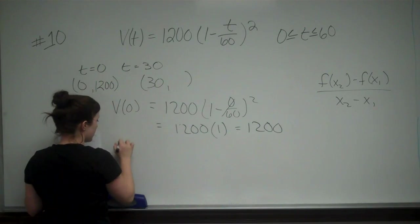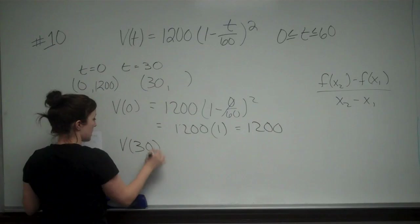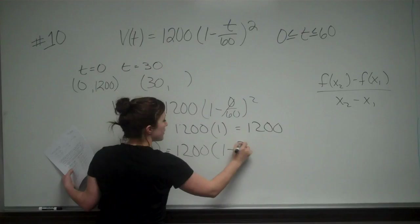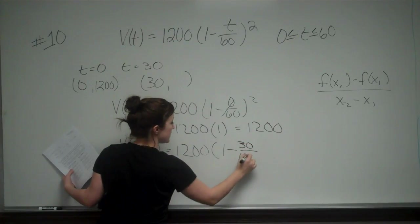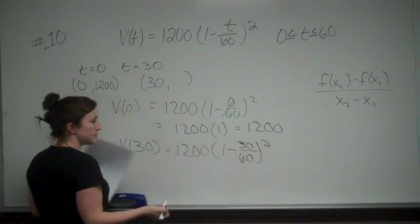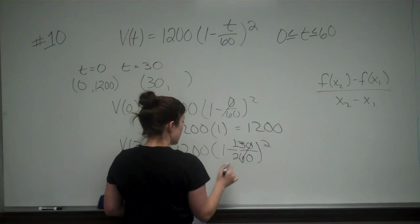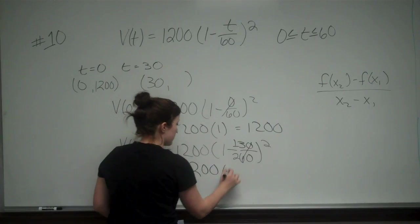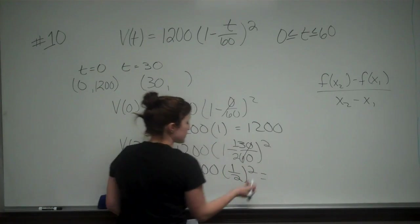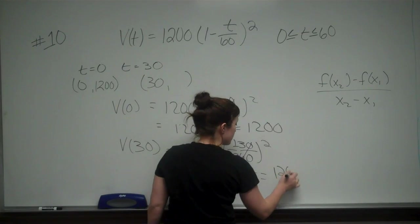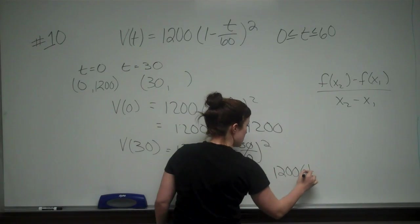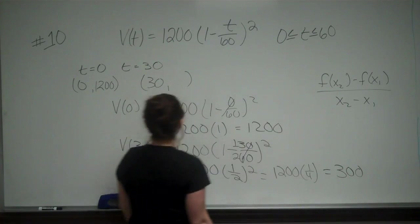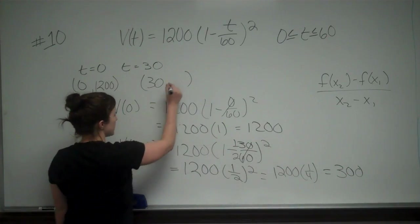Our second point: V(30) equals 1200 times (1 minus 30 over 60) squared. 30 over 60 is one half, so 1 minus one half is one half. One half squared is one fourth. And 1200 times one fourth equals 300. So our second point is (30, 300).